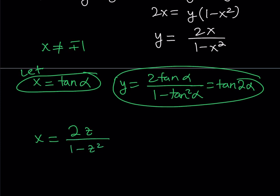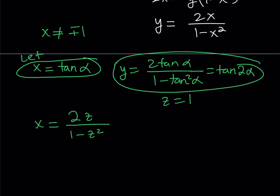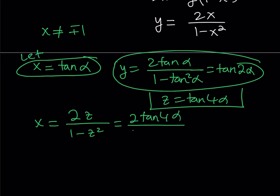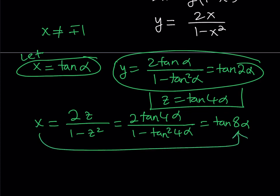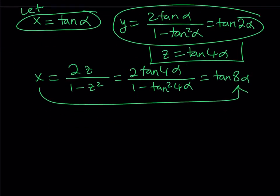We know that z equals tangent 4 alpha, x equals tangent alpha, and y equals tangent 2 alpha. Replacing z with tangent 4 alpha gives 2 tangent 4 alpha divided by 1 minus tangent squared 4 alpha, which is tangent 8 alpha. So now x equals tangent alpha and x equals tangent 8 alpha, which implies tangent 8 alpha equals tangent alpha.